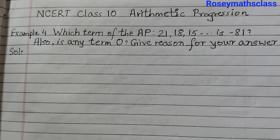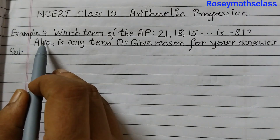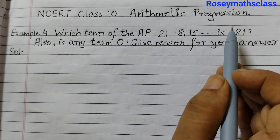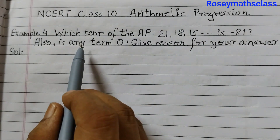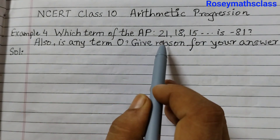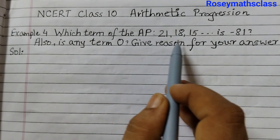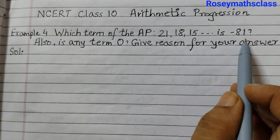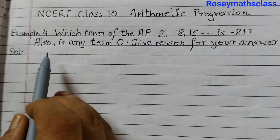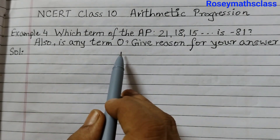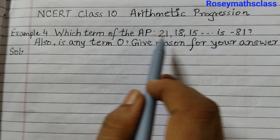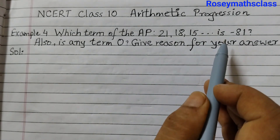Hello students. In this video we shall discuss example number 4 of class 10th arithmetic progression: which term of the AP 21, 18, 15 is minus 81? Also, is any term 0? Give reason for your answer.